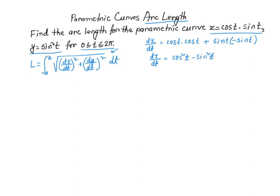Now let me go ahead and square it. So (dx/dt)² — using the perfect square formula — is going to be cos⁴(t) minus 2sin²(t)·cos²(t) plus sin⁴(t).